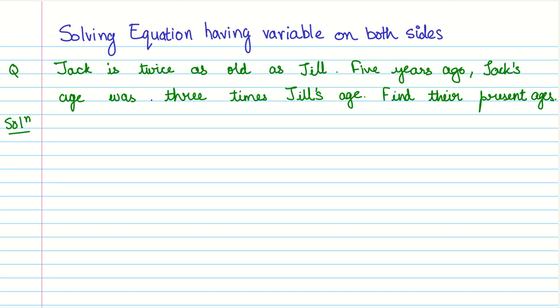Let us look at a word problem which leads us to an equation having variable on both the sides. The problem is Jack is twice as old as Jill. Five years ago, Jack's age was three times Jill's age. Find their present ages.